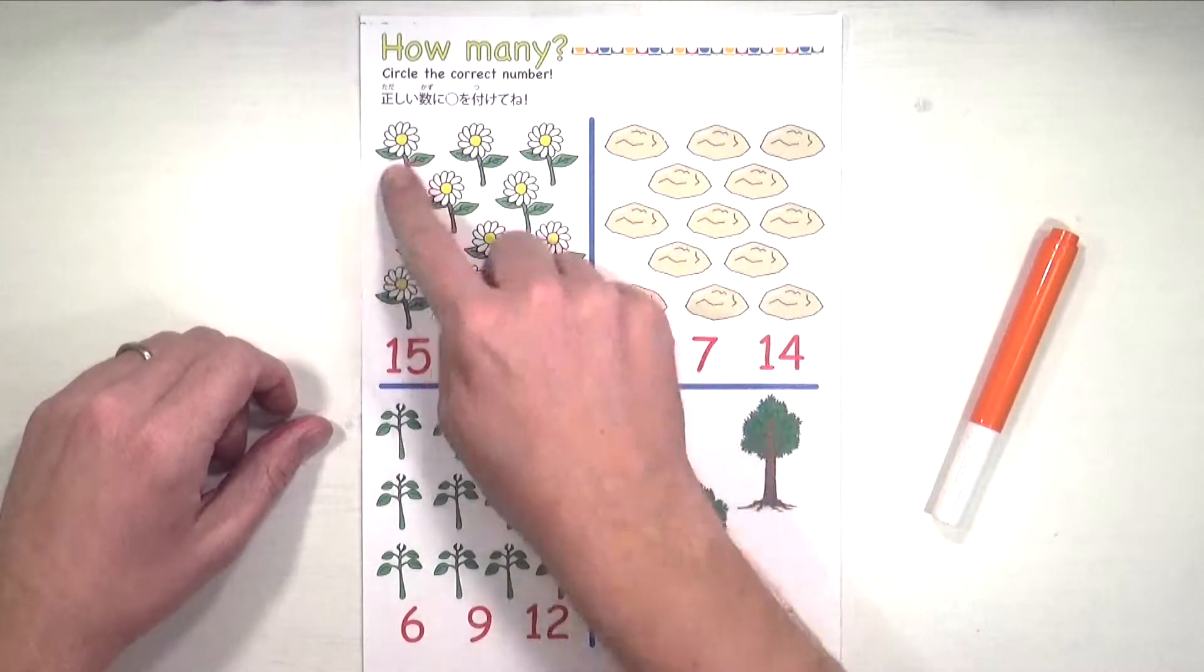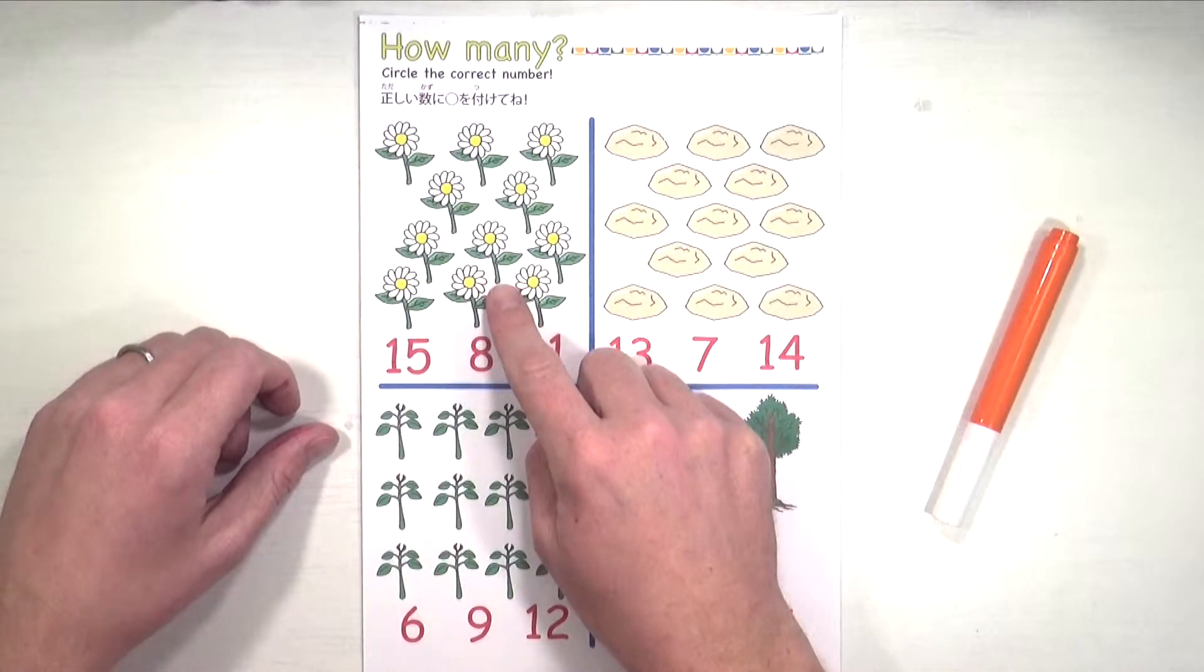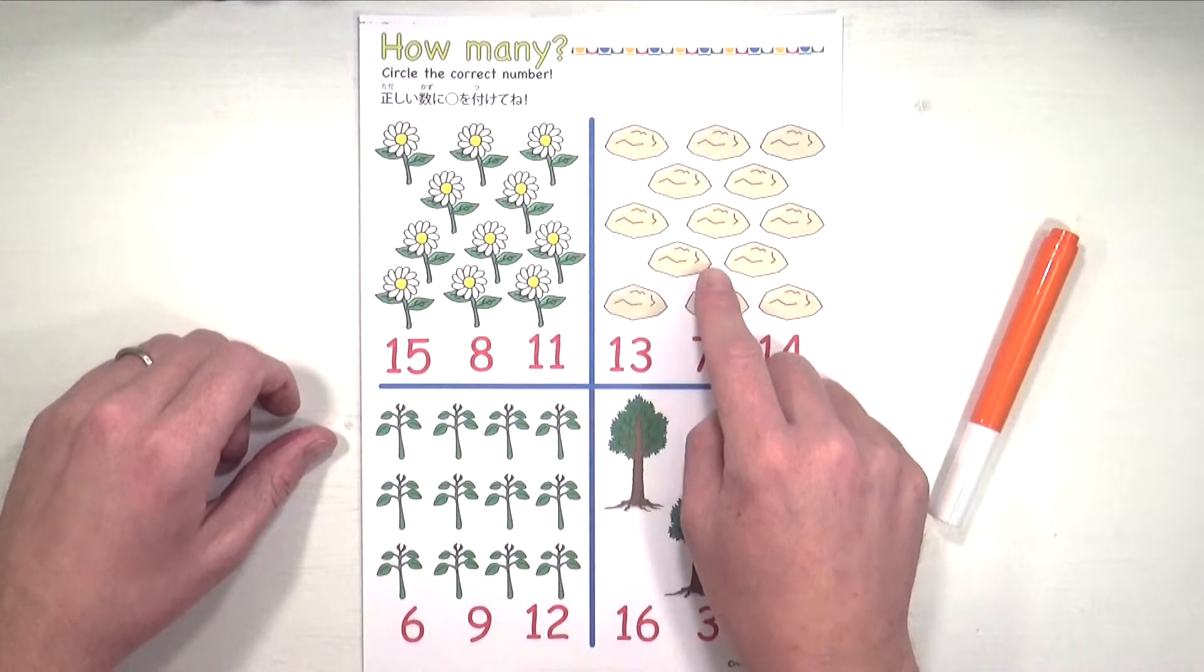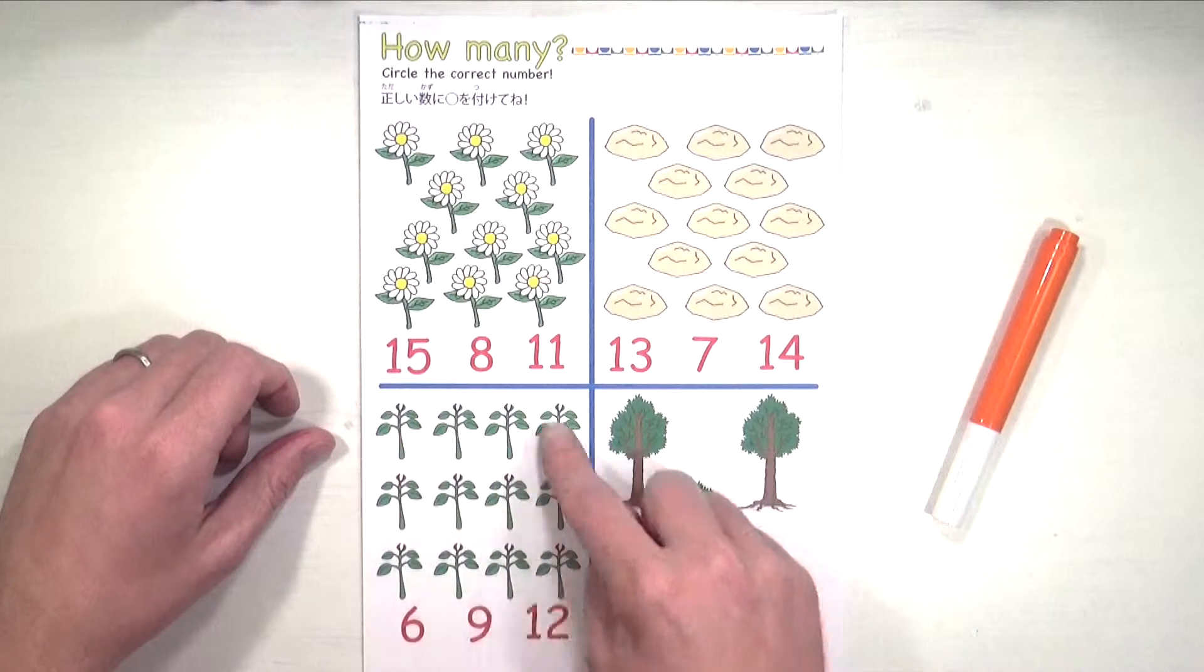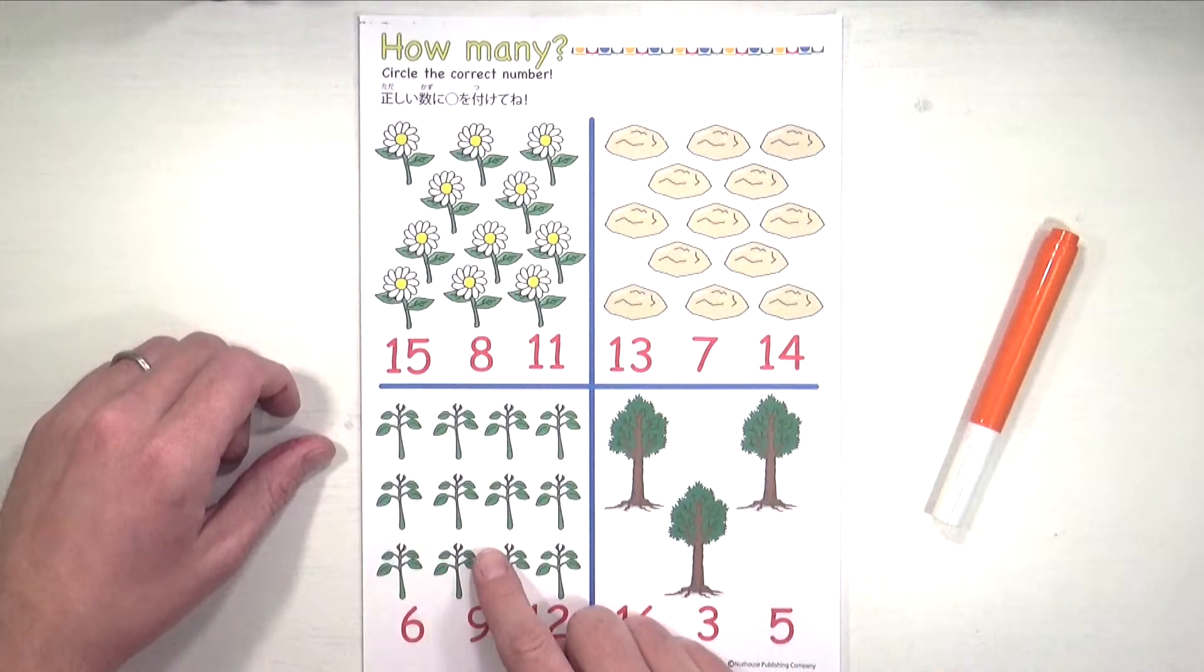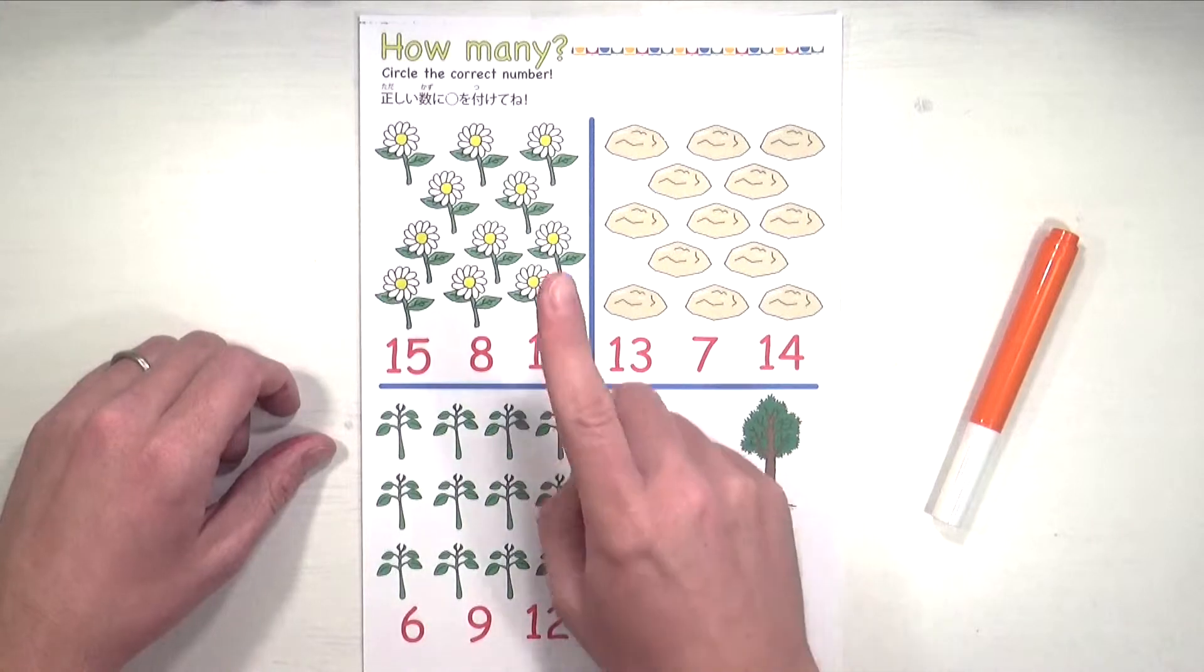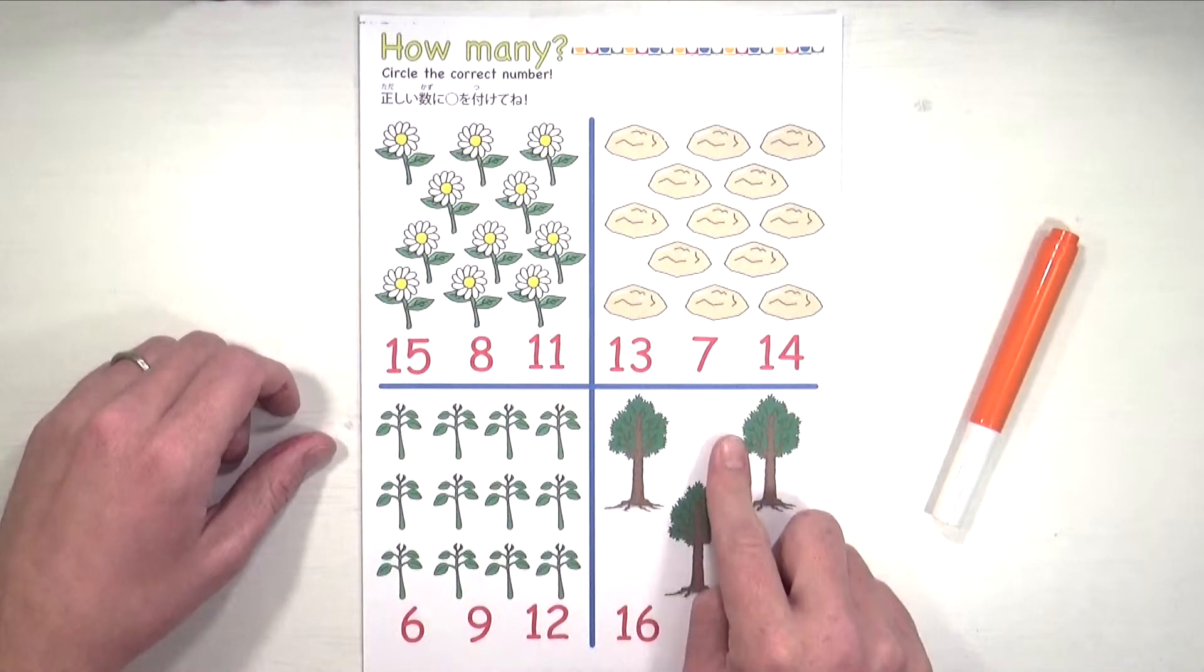First, what are these? Flowers. Very good. What are these? Rocks. Nice. What are these? Plants. And what are these? Trees. We have flowers, rocks, plants, and trees.